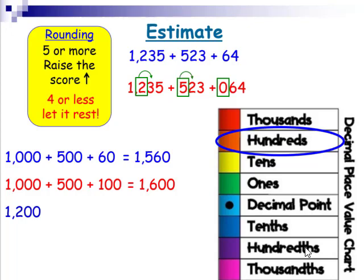3 is 4 or less, therefore the 2 will stay the same, giving us 1,200. In the next whole number, 2 is also less than 4, therefore the 5 will stay the same. And in our last whole number, 6 is 5 or more, therefore we'll raise the score, the 0 will become a 1, and that's 100. Notice that after the number we're rounding, we're just left with zeros, making this really easy to add. When I'm adding this, I'm just taking a look at the 12, the 5, and the 1. 12 plus 5 is 17, 17 plus 1 is 18, and I know I have two zeros behind it.